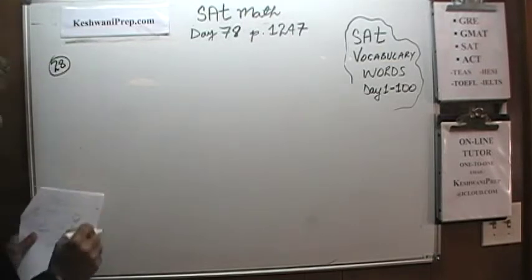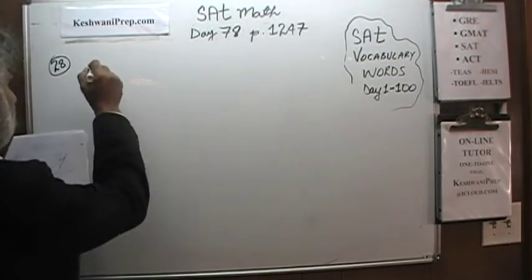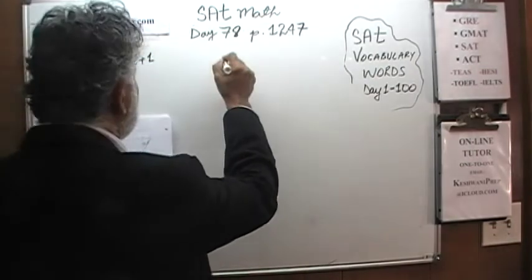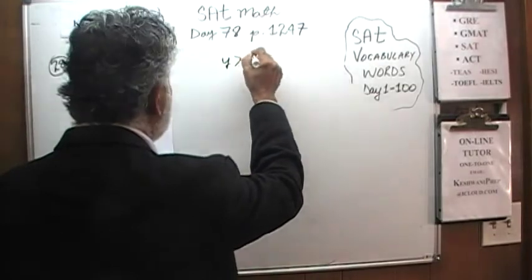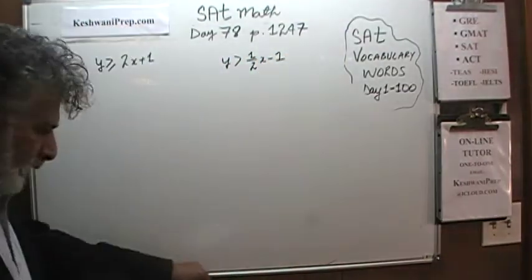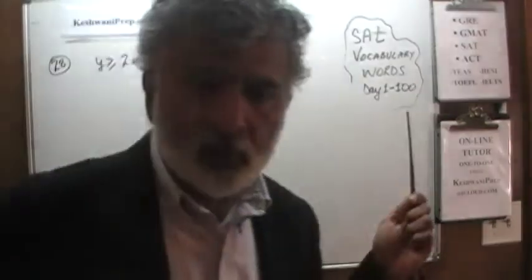The very first problem we see there is number 28. In number 28 we are dealing with two inequalities. The first one says y has to be greater than or equal to 2x plus 1, and the second one says y has to be greater than half x minus 1. Our job is to find the solution region for these two inequalities and tell them in which quadrant the solution does not fall. The solution falls in three of the four quadrants; our job is to find the one where it does not. So let's plot it.